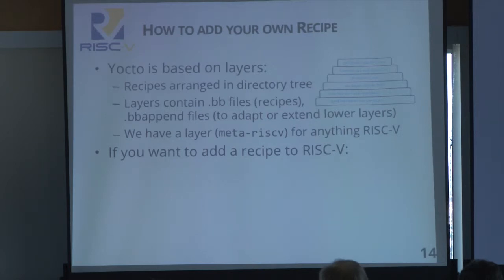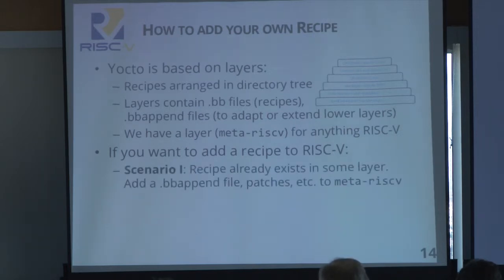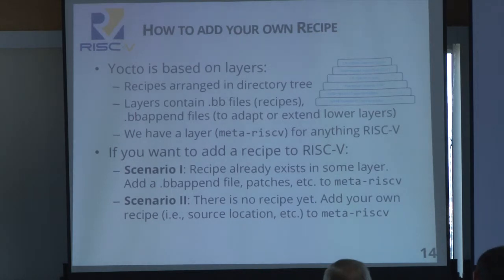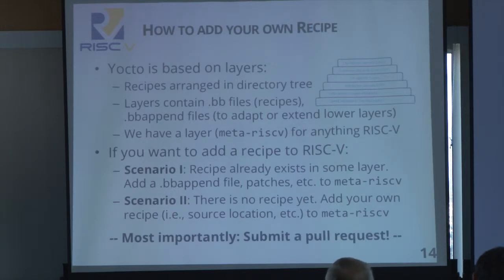If you want to bring up a new application, one of two things might happen. The more likely case is that the recipe already exists in a lower layer — sometimes it will just run out of the box, but you might need to do some patching, for example to adapt a configure script to know about RISC-V. In that case you add a .bbappend file to meta-riscv containing any patches or additional configure settings. If there's no recipe yet, you can write a full recipe and add it to meta-riscv. In either case, we strongly encourage you to send us pull requests, as we'd really like to grow Pokey and support a larger number of packages on RISC-V so the next person can just reuse the work.